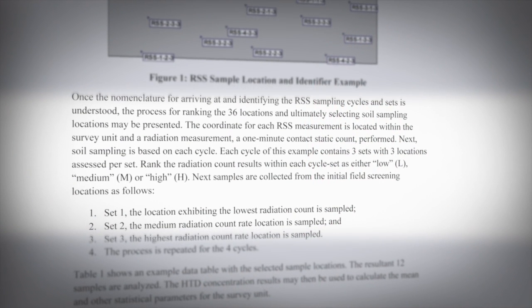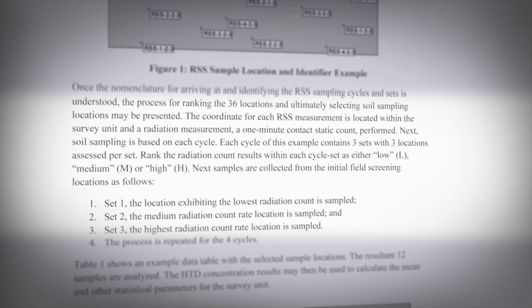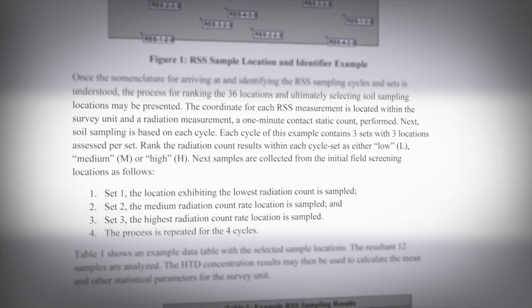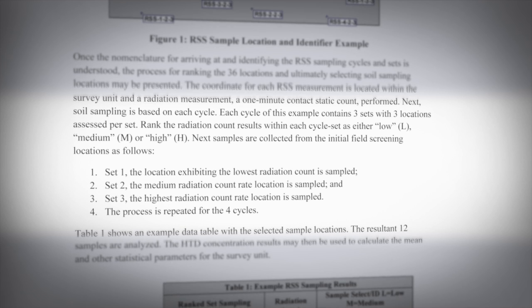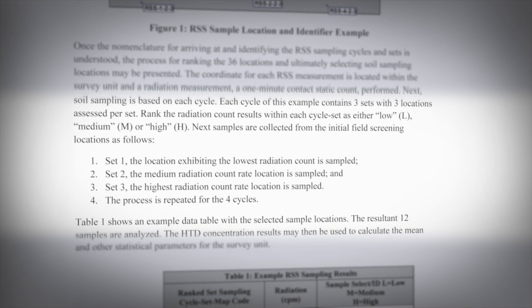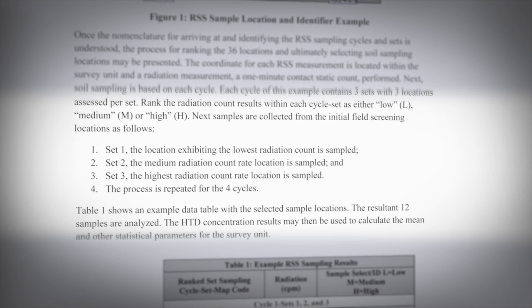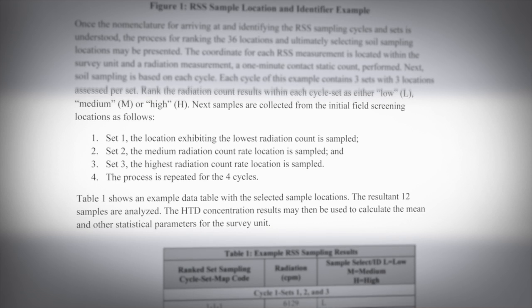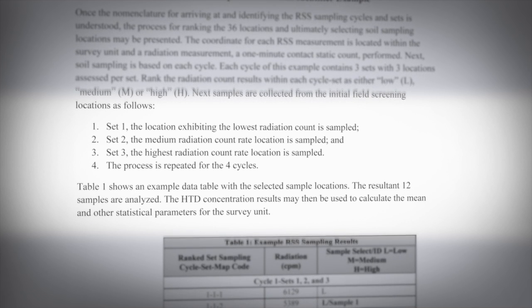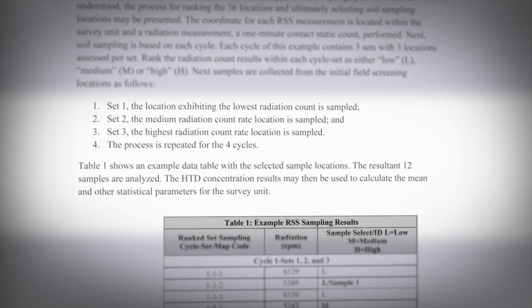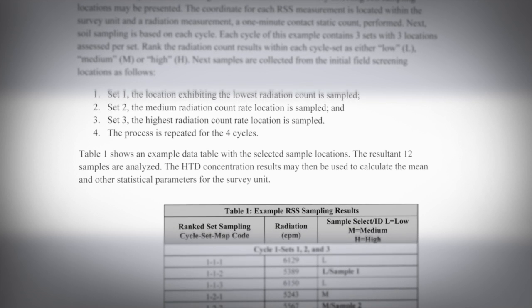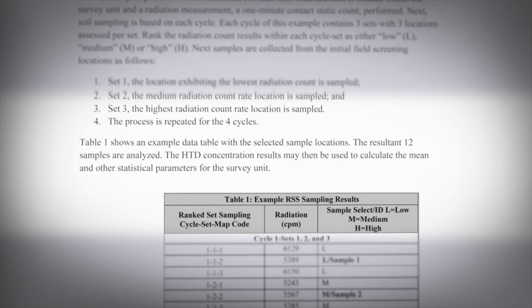For cycle one, set one, we're going to take three measurements, rank them as low, medium, or high, and collect the sample from the lowest location. Set two of cycle one is the same scenario — we take measurements from those three locations and collect the sample with the medium highest radioactivity level. In cycle one, set three, we take measurements from three locations and sample the highest location. Then we begin cycle two, which will have three sets associated with it as well. We repeat that until we've looked at all 36 locations and collected our 12 samples.